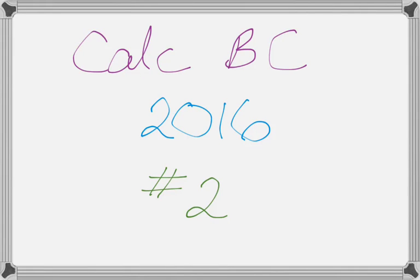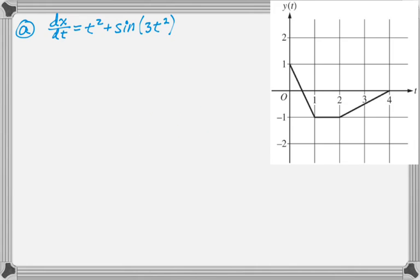Okay, in this video we're going to talk about number 2 from the 2016 Calc BC exam, and it's the parametric vector-y question. It's a little different this year. We're given that dx/dt is t squared plus sine of 3t squared. And we're also given a graph of y of t, so that's not the graph of the derivative, it's actually the graph of y of t, the component function.